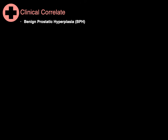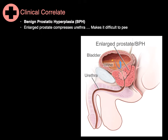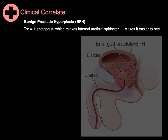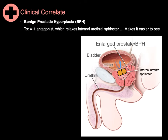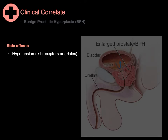In benign prostatic hyperplasia, or BPH, you have an enlarged prostate that compresses the urethra and makes it difficult to urinate. A treatment is to give an alpha-1 antagonist, which relaxes the internal urethral sphincter, making it easier to urinate. Some side effects are hypotension — because alpha-1 adrenergic receptors are also on systemic arterioles, so blocking them dilates blood vessels, causing lightheadedness — and also retrograde ejaculation, because if that sphincter relaxes and is open during ejaculation, semen can go into the bladder.